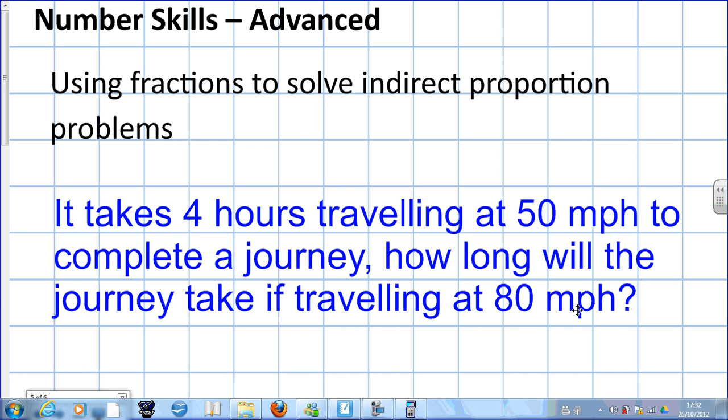But if one of the things goes up, like for instance time, as the speed goes down, or the other way around, the time of the journey will go down as the speed goes up. In other words, they're working in opposite directions. Then it's an indirect proportion problem, and we solve them slightly differently.